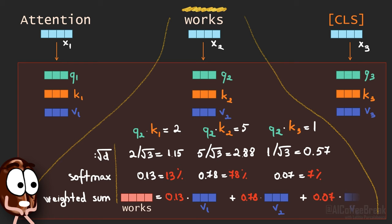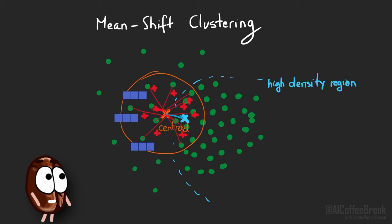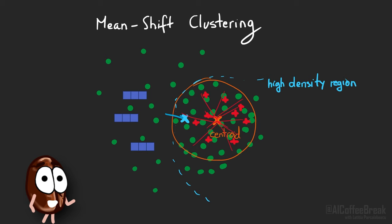There we add the value vectors weighted by how similar their query and key was. So here in attention we add value vectors, just like in mean-shift clustering we add data points to compute the mean, so the centroid. The denser a region, the more data points contribute to that mean, which is similar to high attention scores that make a certain input token contribute a lot.